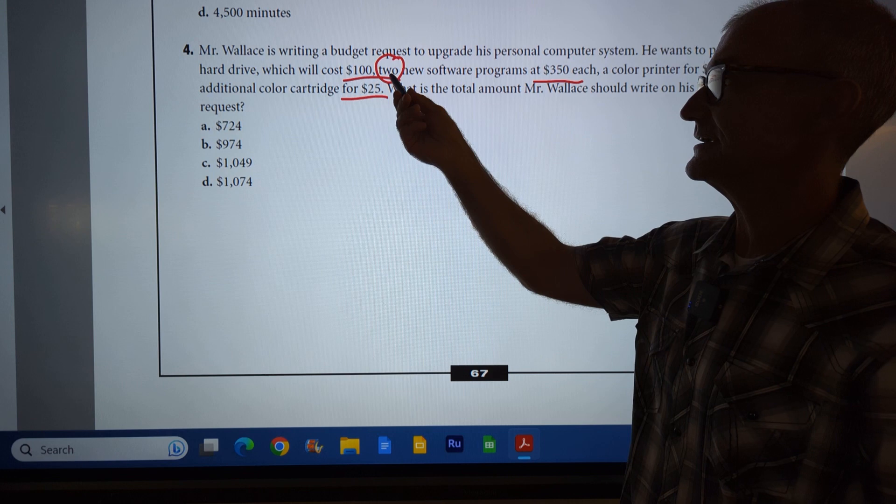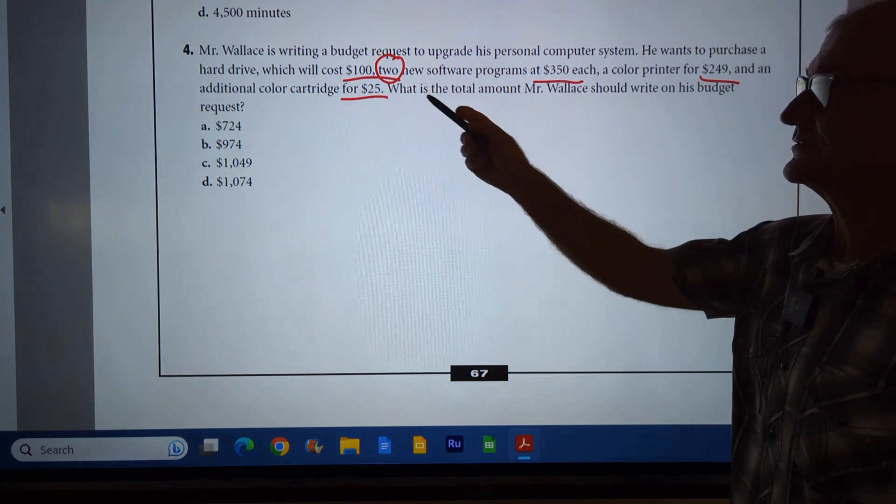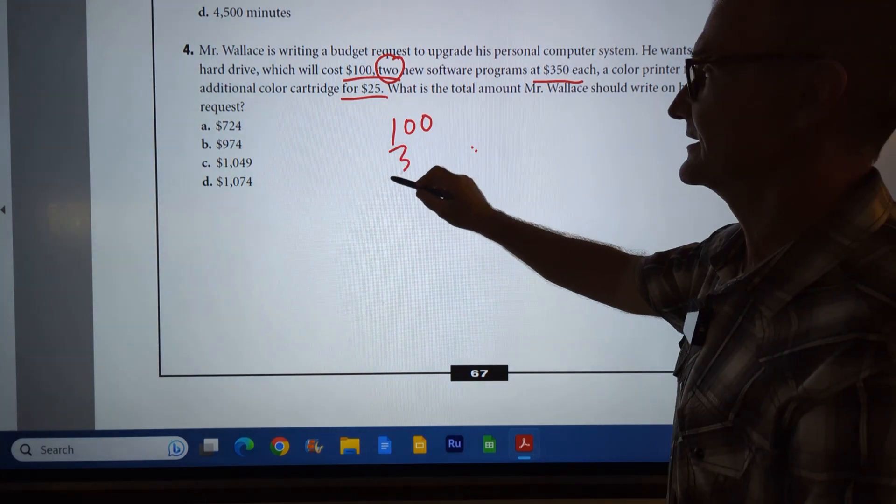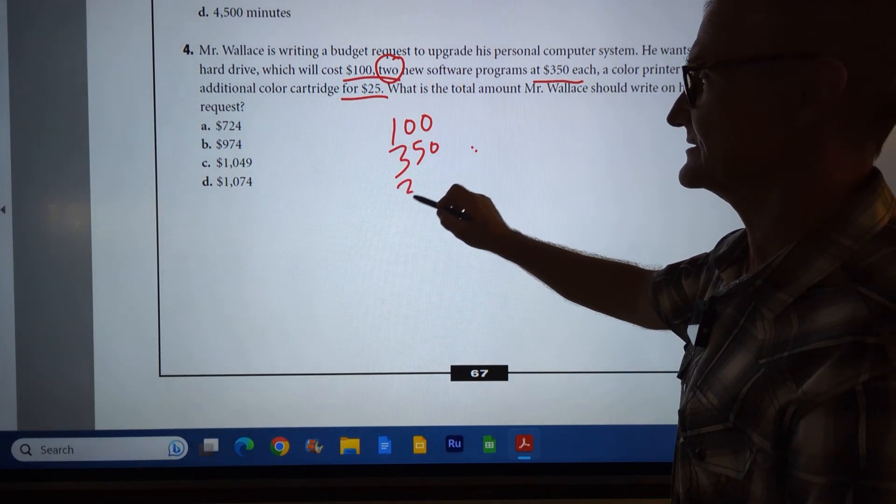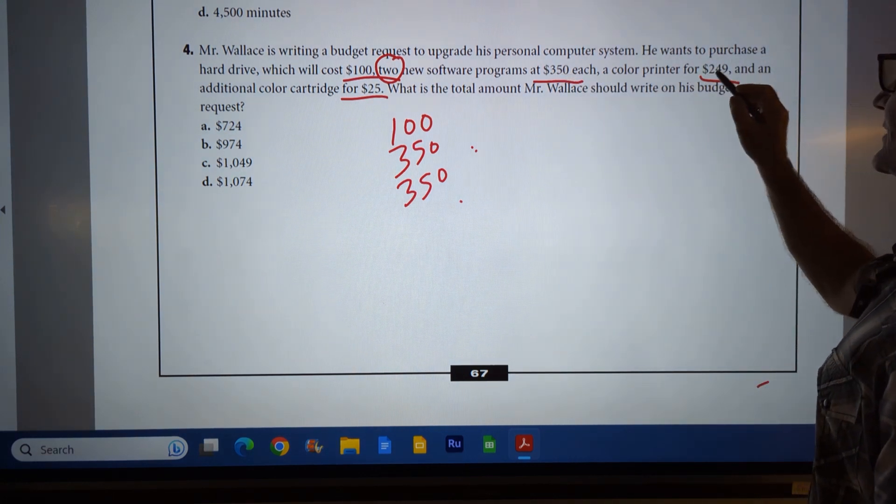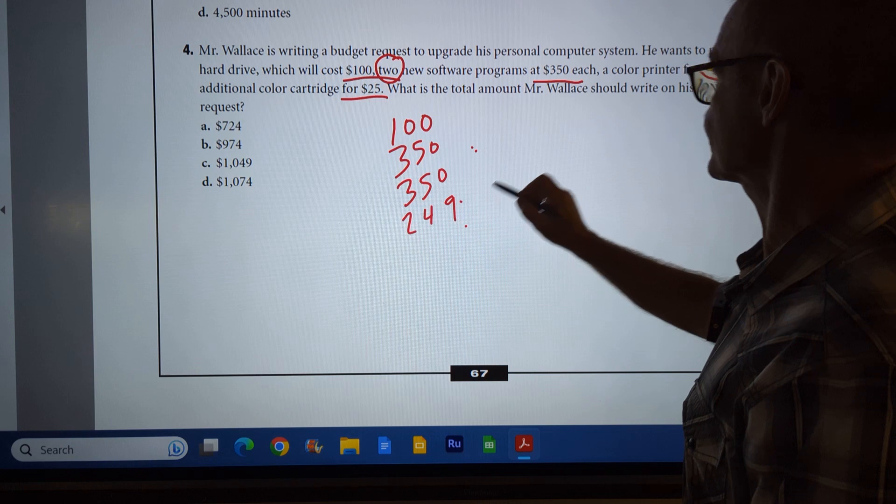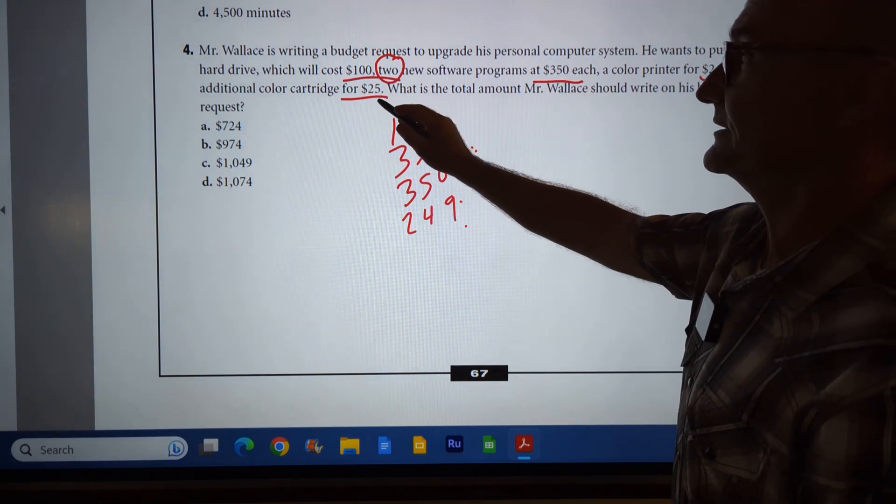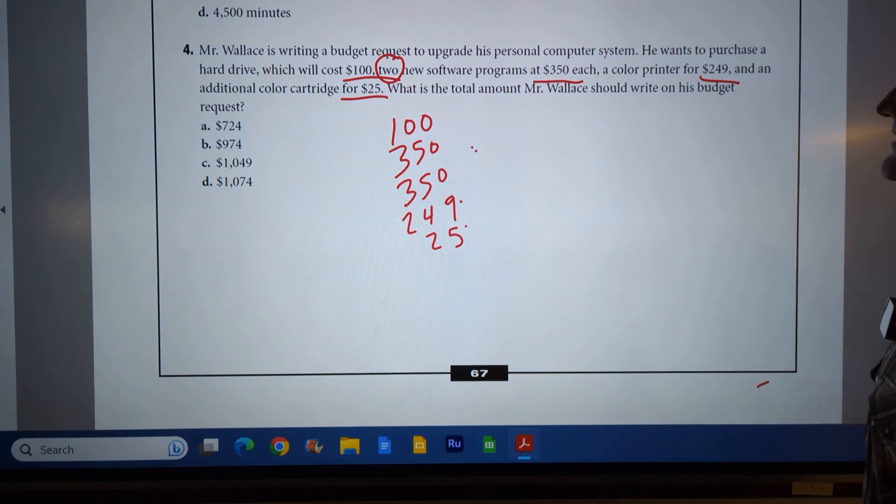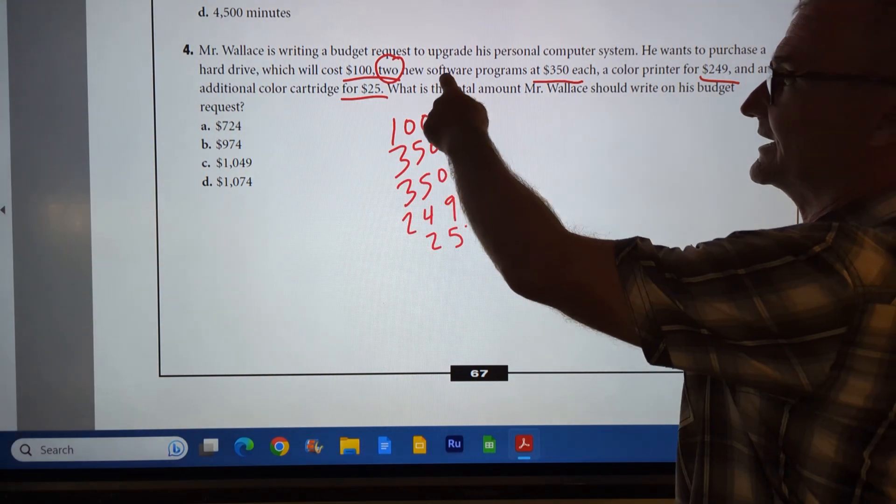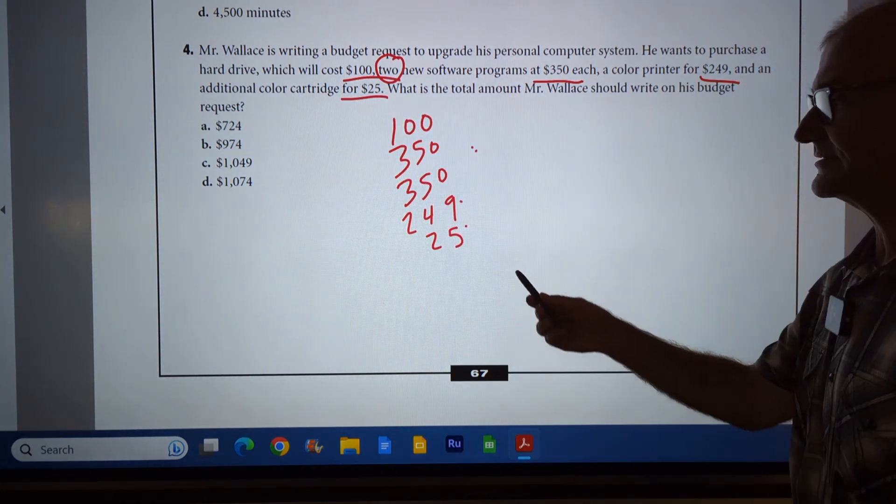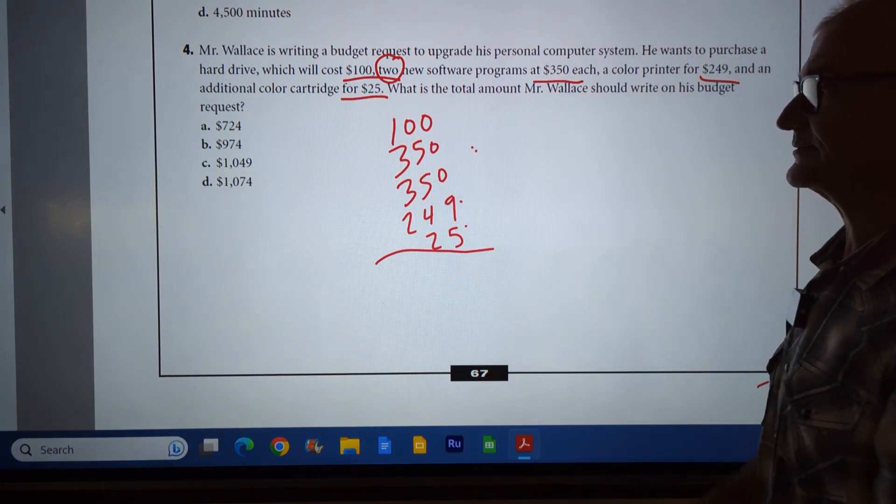So this is kind of the tricky part here. I got a number two right here, and I got two of those. So I got $100 for the first thing. I have two at $350. I'm actually just going to write it twice. Those are my two at $350. One at $249, one at $25. I think I have them all in there. I double-check, make sure I have all my pieces, and again, that's the trick right there, that I need two of those $350. Those things are all going to be added together.